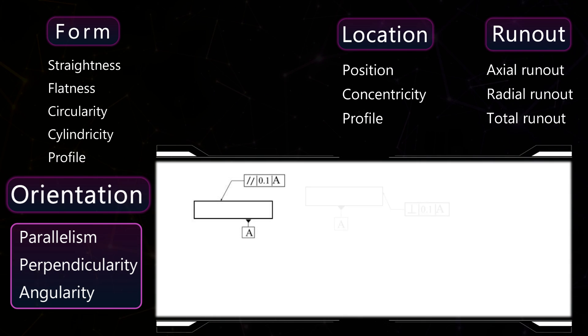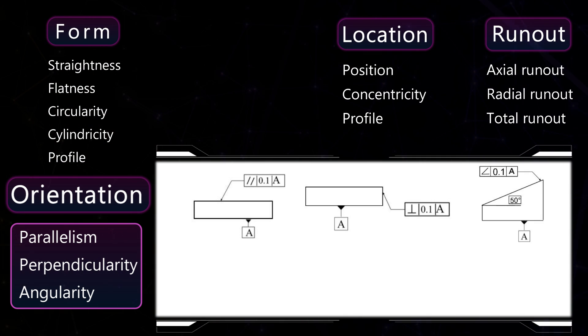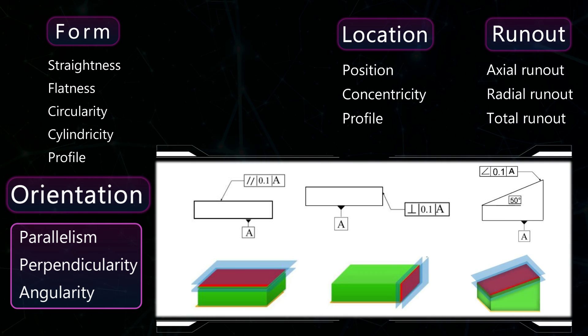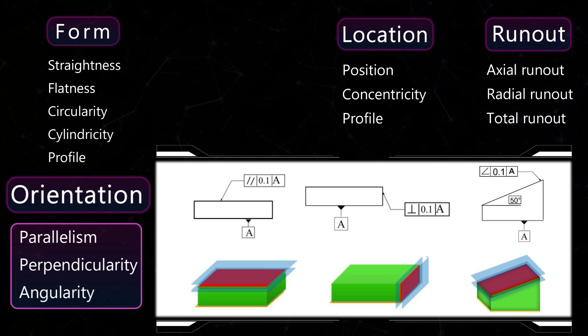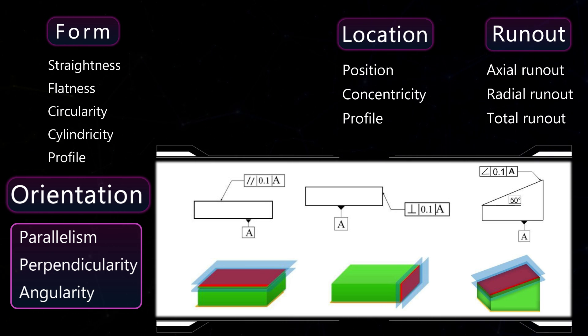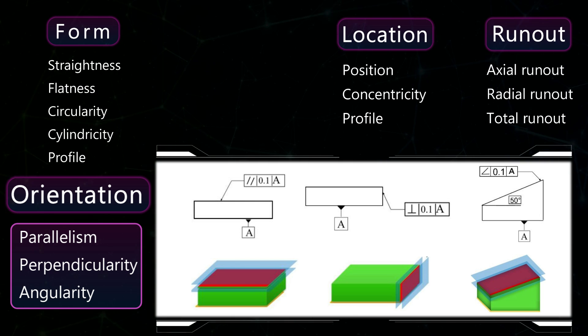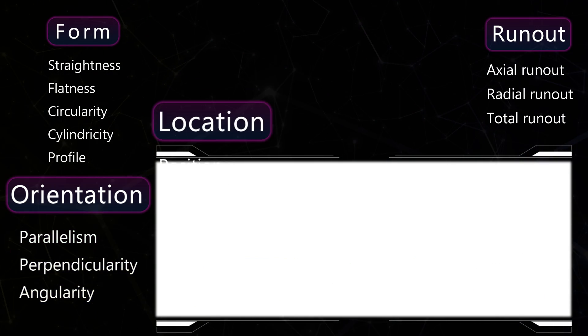Parallelism, perpendicularity, and angularity need a datum, so the tolerated feature should lie between two parallel theoretical planes. The distance between them is the tolerance value, and these theoretical planes are either parallel, perpendicular, or have a certain angle to the given datum.